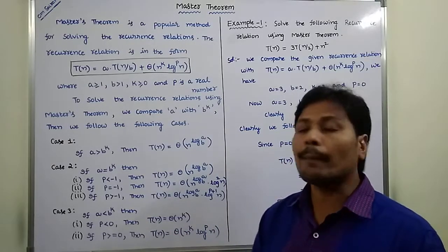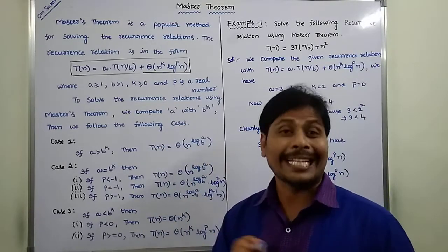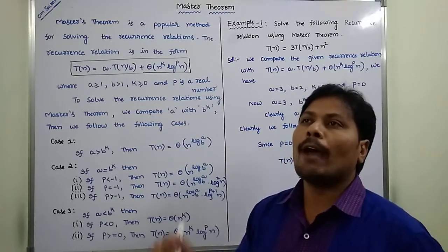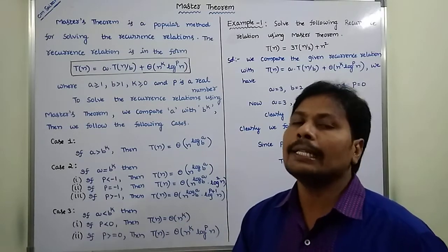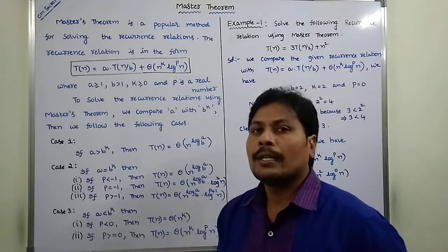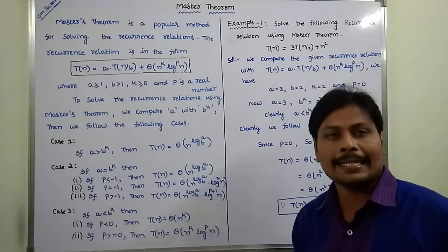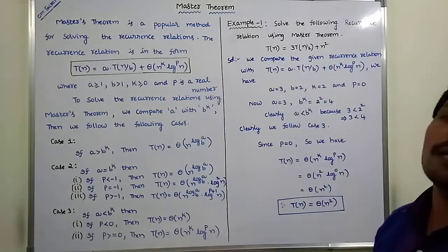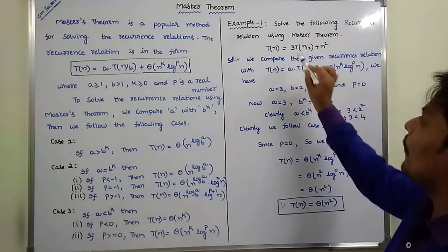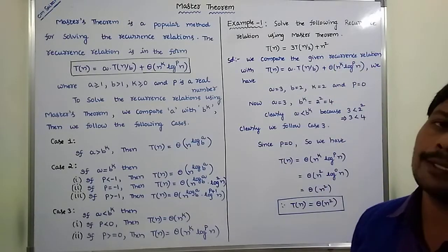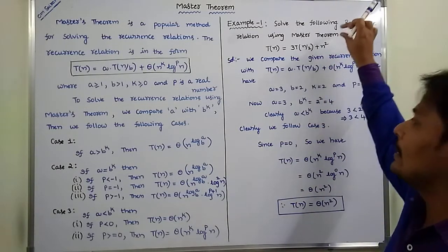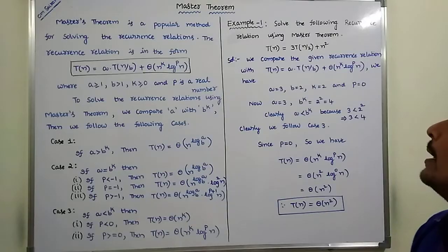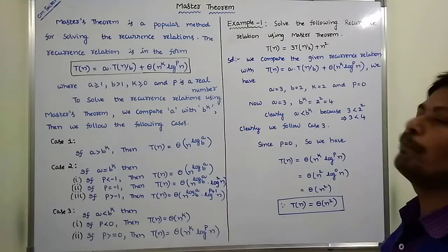Remember these six formulas — once you memorize them, you will definitely get 3 or 4 marks in the GATE examination. Now we go for an example problem on Master Theorem: solve the following recurrence relation using Master Theorem. T(n) = 3·T(n/2) + n². What are the values of A, B, k, and p?